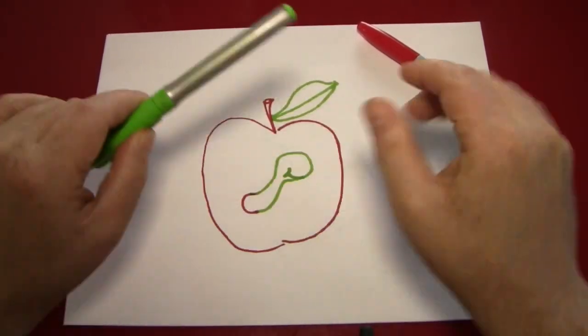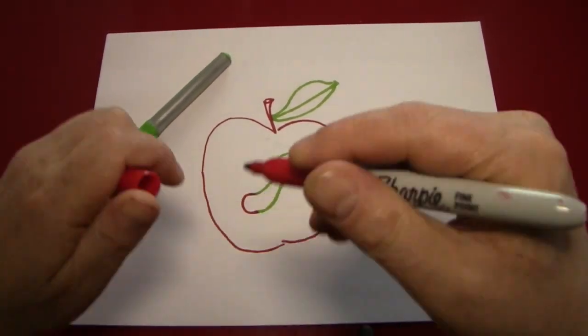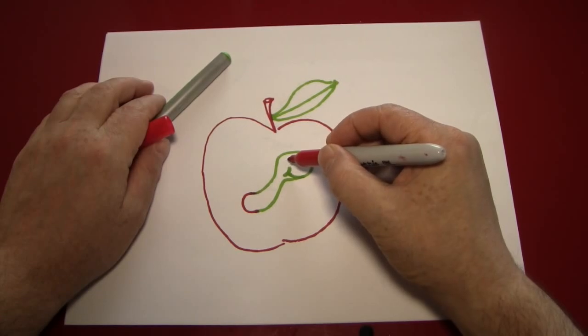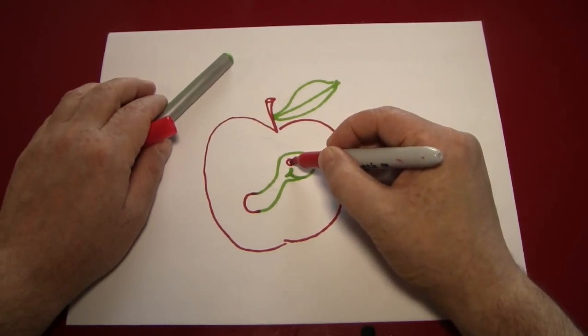If you want to get fancy, why not give him a little red eye, since we have both colors to play with. A little circle and a little dot inside the circle.